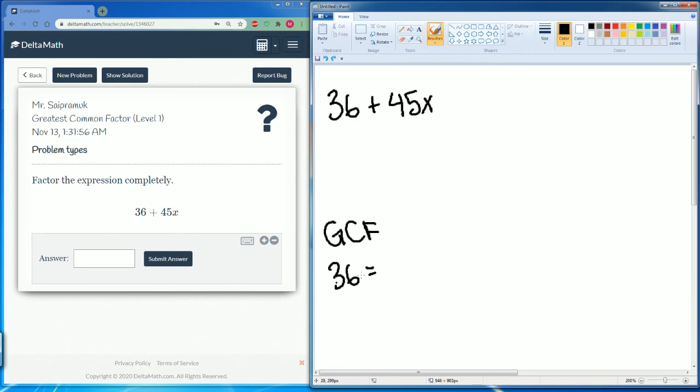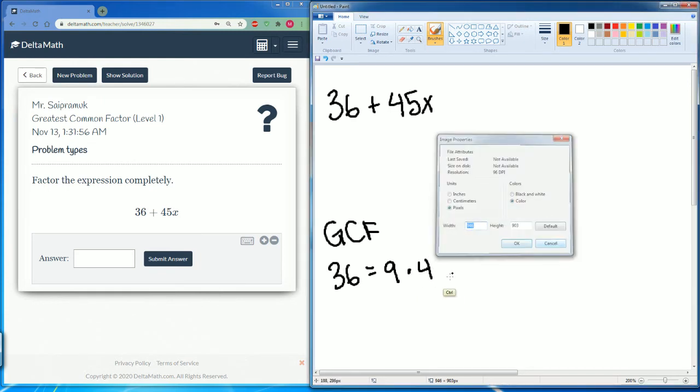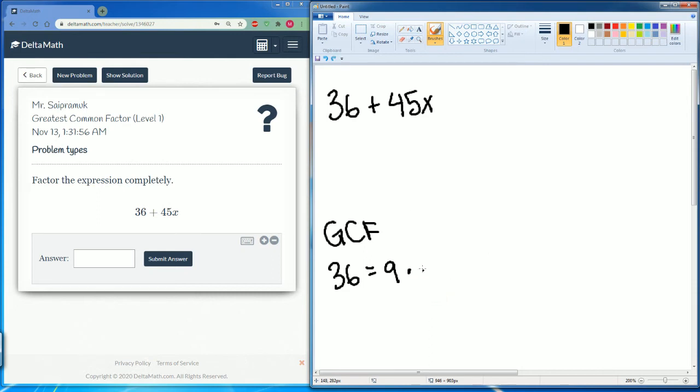I'm going to say this is really 9 times 4. The number 4 can be broken down into 2 times 2. The number 9 can be broken down into 3 times 3. Do you see how I pick out the numbers?